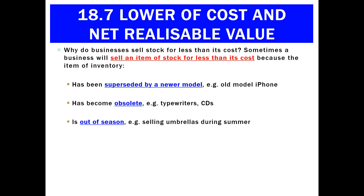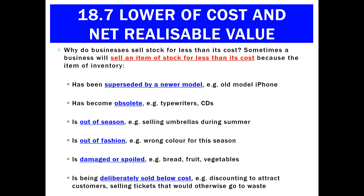So why would we sell something for less than its cost? Some reasons could be: it's been superseded by a newer model — for example, an iPod replaced by the iPhone, or the iPhone 5 losing value when the iPhone 6 came out. Maybe it's become obsolete, like a typewriter or CDs. Maybe it's out of season, like selling umbrellas during summer or swimwear during winter. It's out of fashion, the wrong colour or brand. It could be damaged or spoiled — like bread, fruit, vegetables, or electronics with a crack in them. Or maybe we're just deliberately selling it below cost, because we're better off getting something for it than nothing.